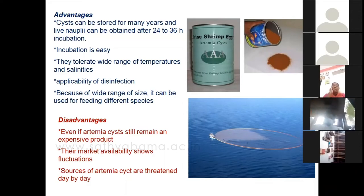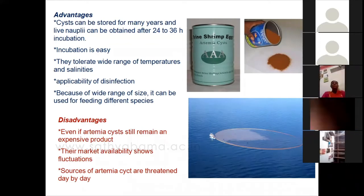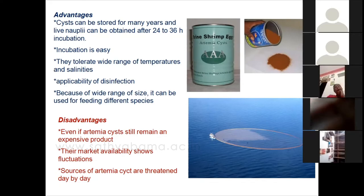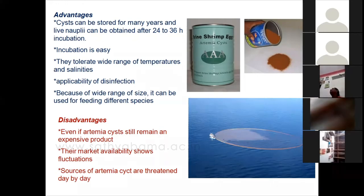The disadvantages are that artemia cysts remain an expensive product depending on market demand and seasonal availability — in some seasons you cannot even get artemia cysts for normal research purposes. The source of artemia cysts is also threatened day by day because of climate change and other adverse global changes. One more disadvantage is that cysts may be a carrier for pathogenic bacteria if not properly hatched and given to animals, meaning the animal may have a chance of getting a pathogen infection.